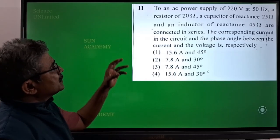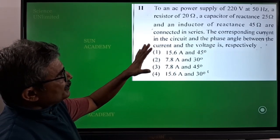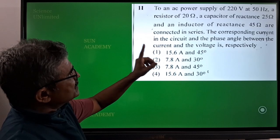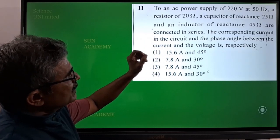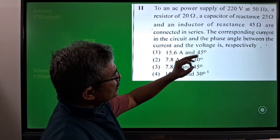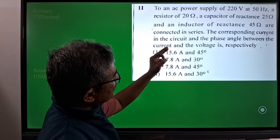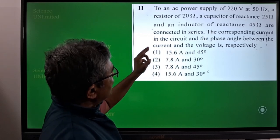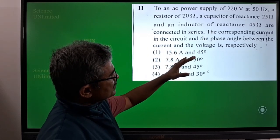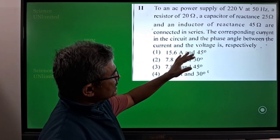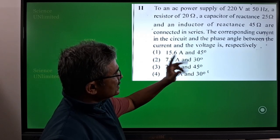Our next question is, to an AC power supply of 220 volts at 50 hertz, a resistor of 20 ohms, a capacitor of reactance 25 ohms and an inductor of reactance 45 ohms are connected in series. The corresponding current in the circuit and the phase angle between the current and the voltage respectively.